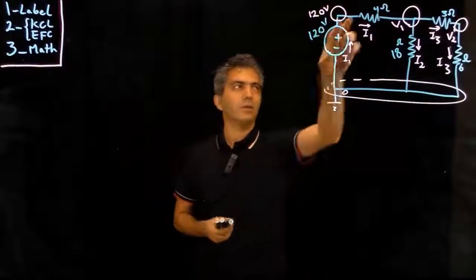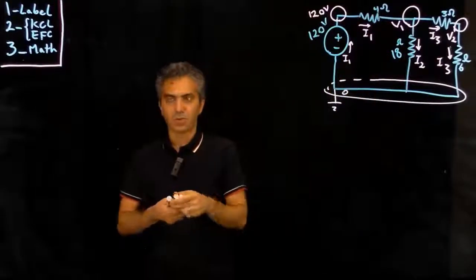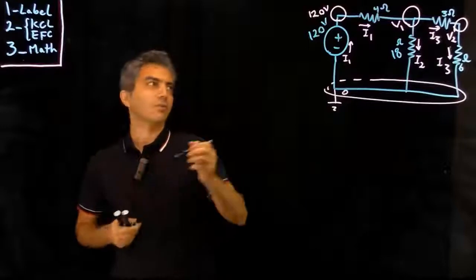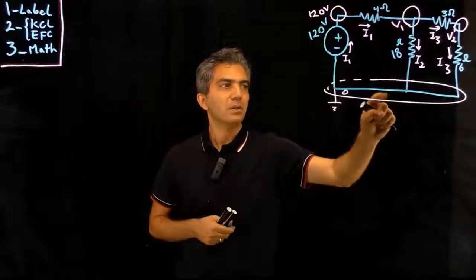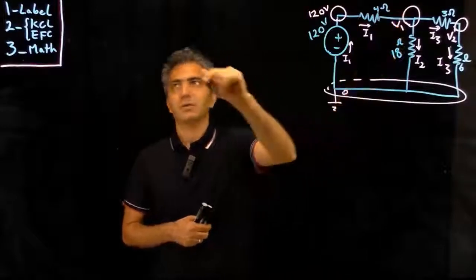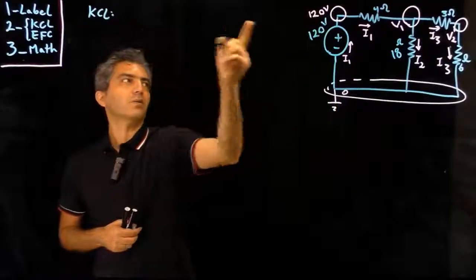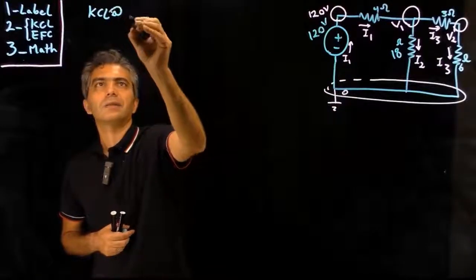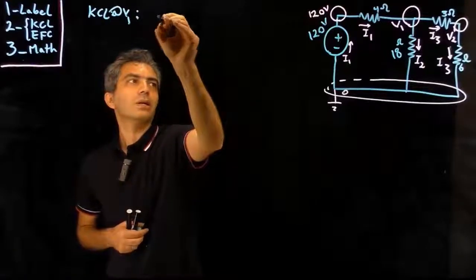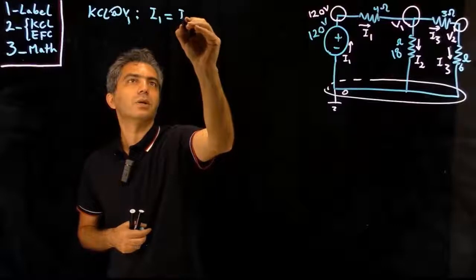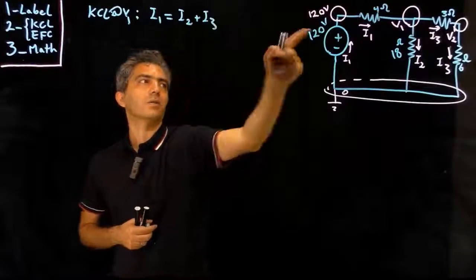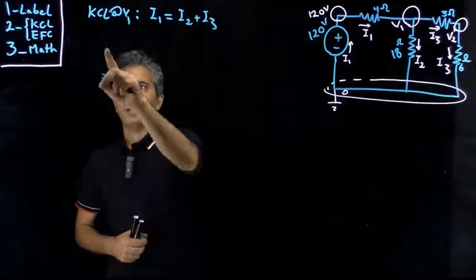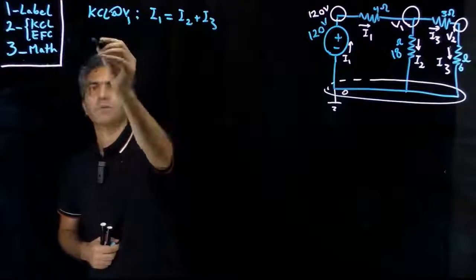Once you're done labeling all the voltages of the nodes and all the currents passing through each component, the next step is writing KCL for the nodes that you haven't already written KCL for — in this case, that node and this node. This node you don't have to write KCL for. KCL at V1 would be: I1 is equal to I2 plus I3. The current going into that node equals the currents leaving the node. There's no other KCL, so I'm going to move on to equations for components.